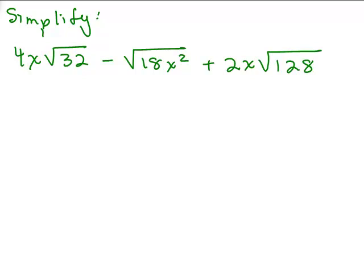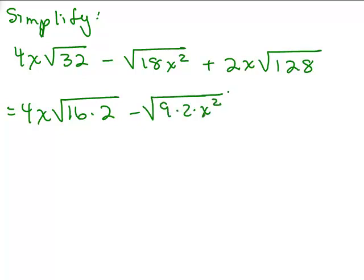Here's another one for you to try. Go ahead and put this on pause and try it. We've got 4x. With 32, I'm going to write that as 16 times 2. 18 will be 9 times 2, x squared is a perfect square. And 128, if you don't see it automatically, divide by 2 and see if you get a perfect square. That's my little trick. That's 64 times 2.